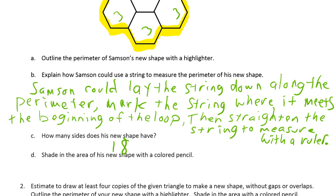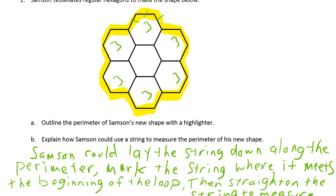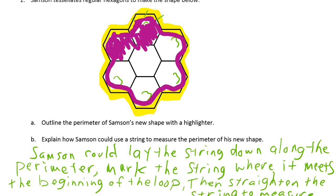And it says shade in the area of his new shape with a colored pencil. So I'm going to use a purple marker for this. So just like I said before, we shade the area. That's the inside. The area is the space inside. The perimeter is the distance around the outside.